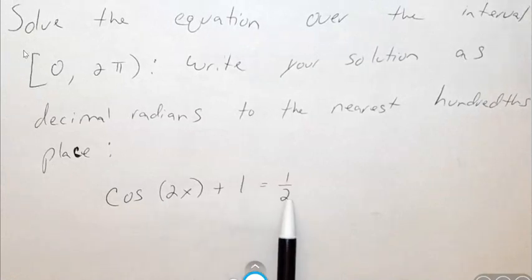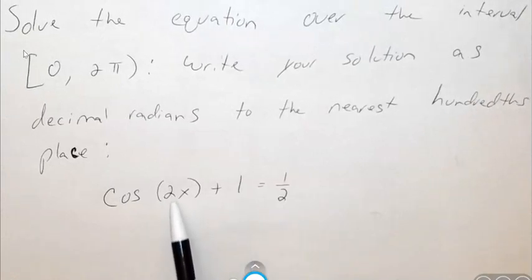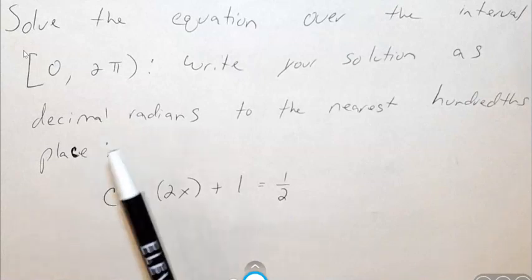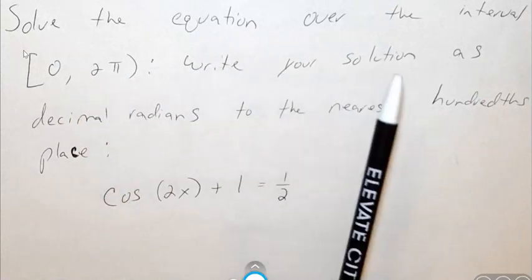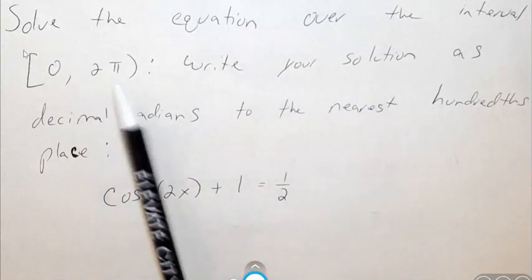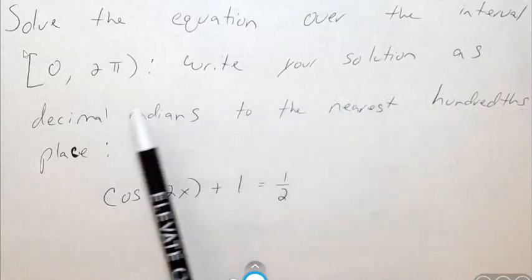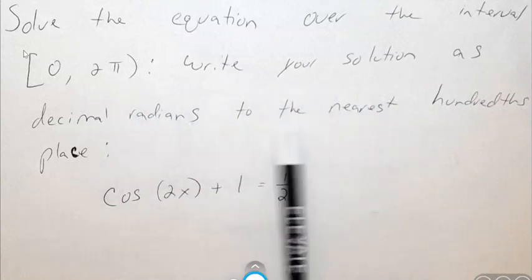Cosine of 2x plus 1 equals 1 half. This is a double angle equation because you have a number in front of x. The directions say solve the equation over the interval 0 to 2 pi. Write your solution as decimal radians to the nearest hundredths place.